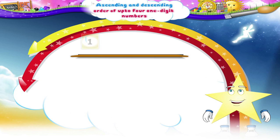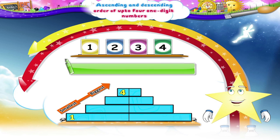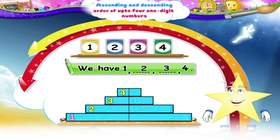Take the numbers one, two, three, four. Now, one is the smallest number and four the biggest. We have one, dash, dash, dash, four. Similarly, between two and three, two is the smaller number, so we write two in the first blank, then three. So, one, two, three, four — that's the arrangement in ascending order.